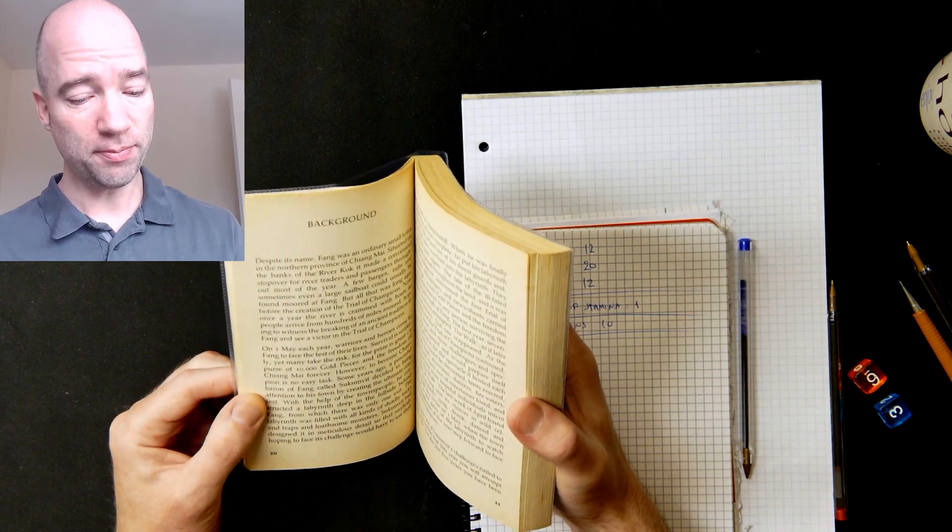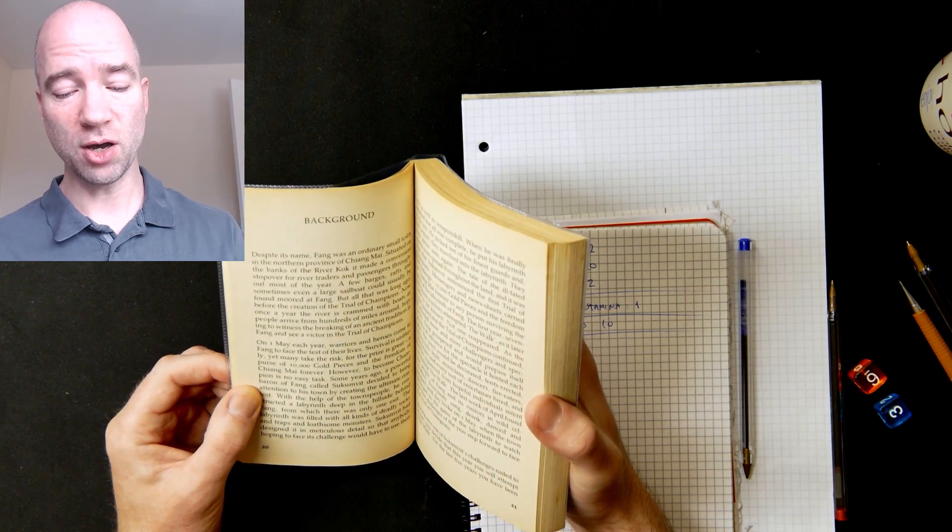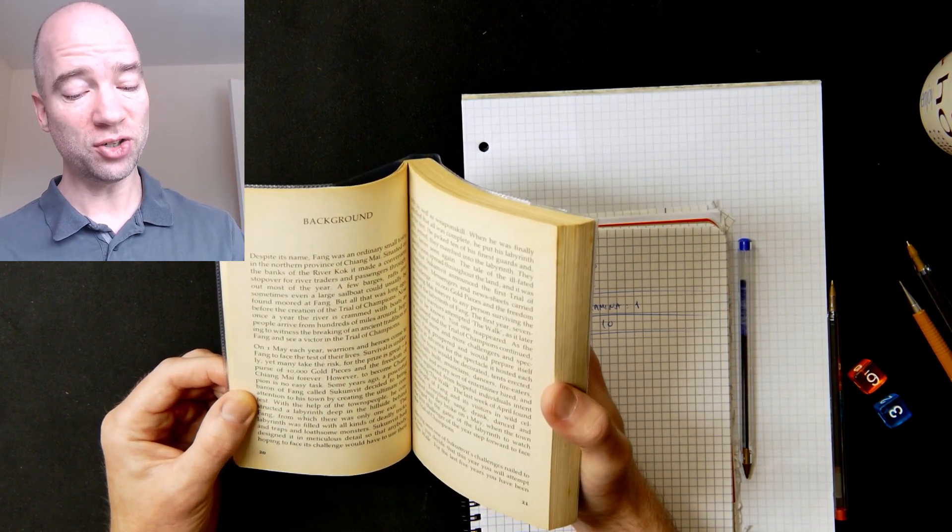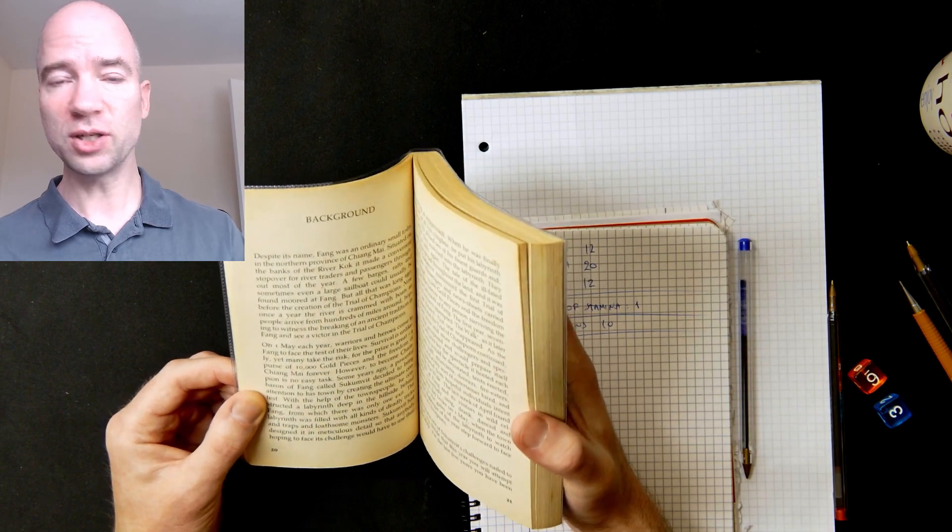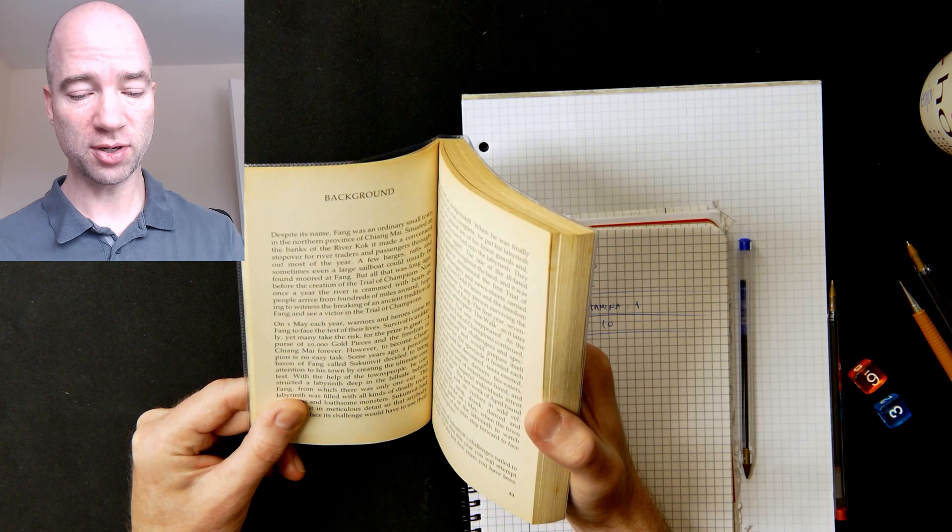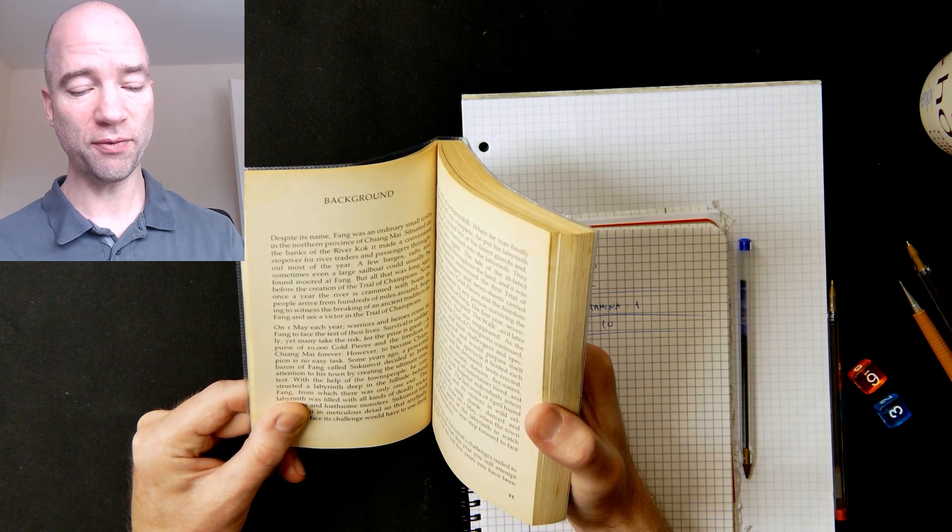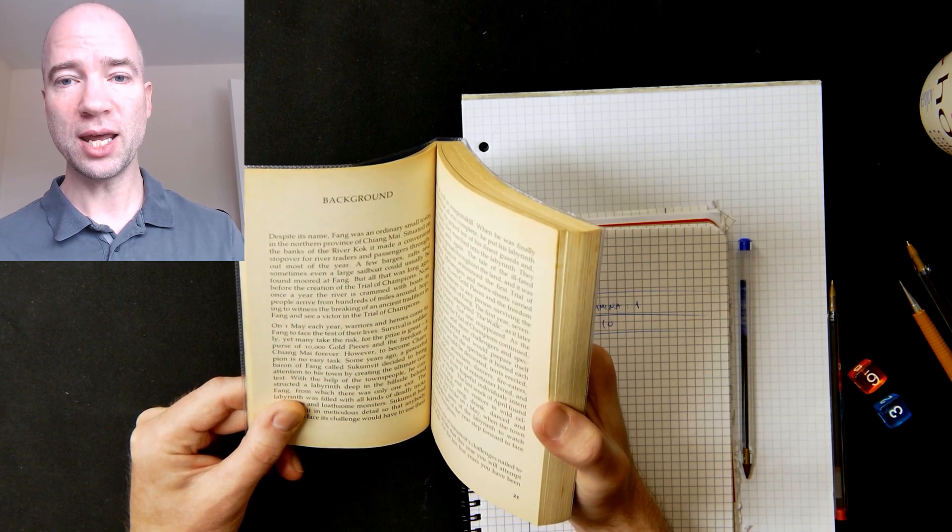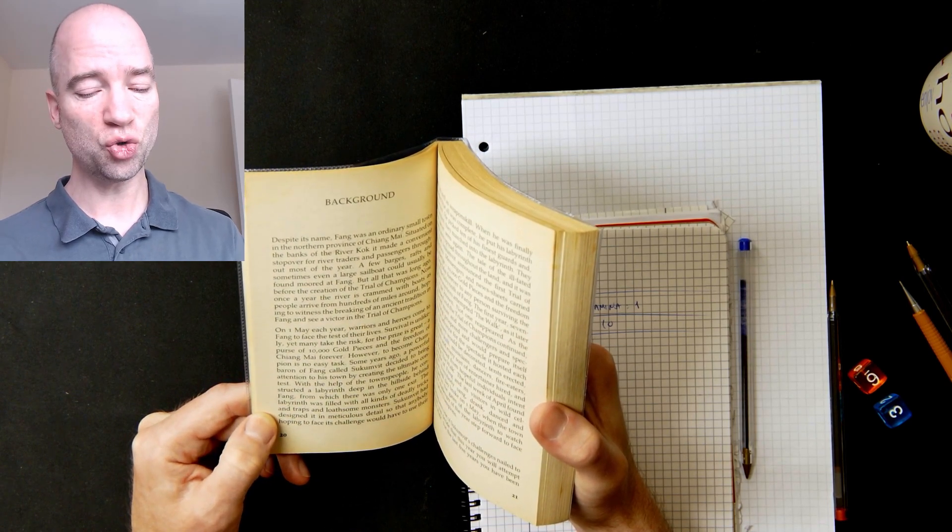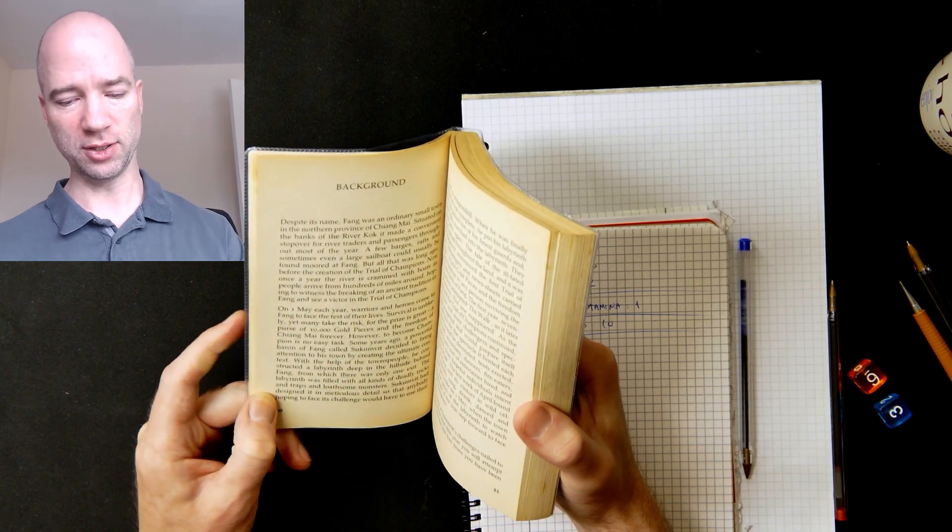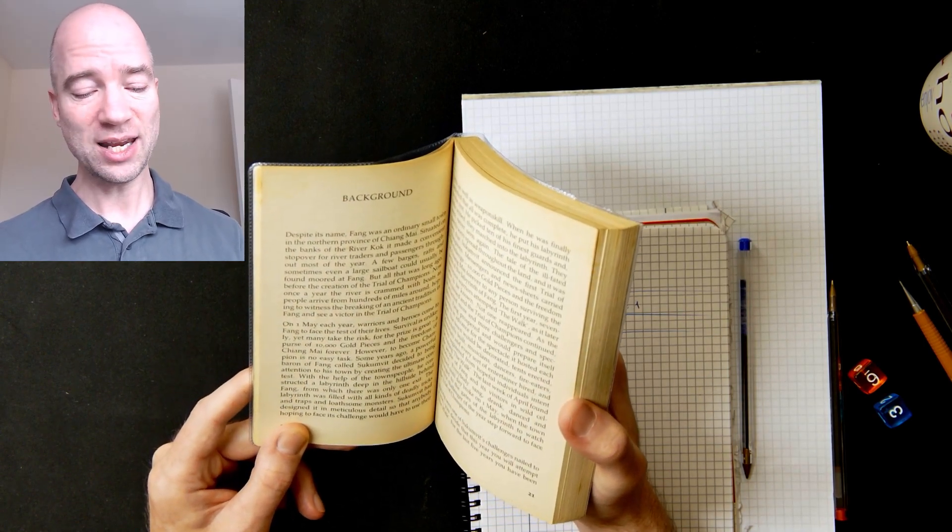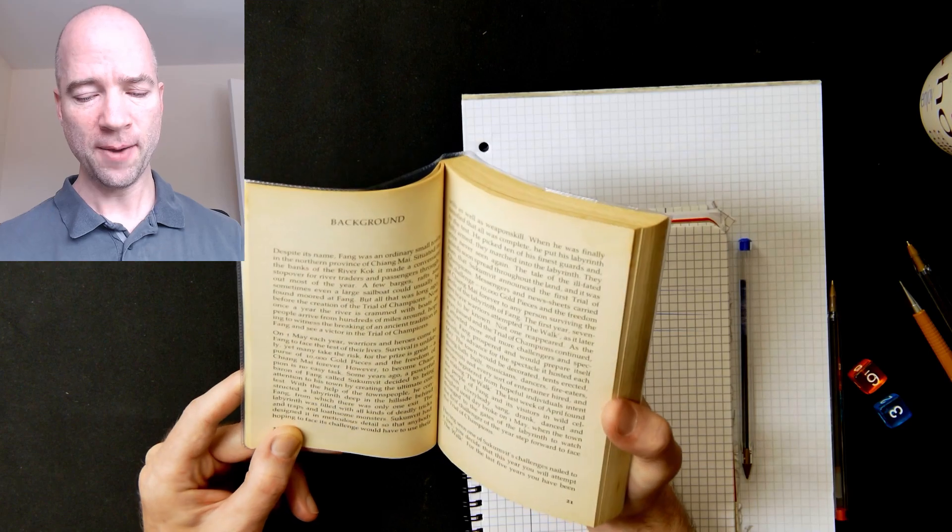On the first of May each year, warriors and heroes come to Fang to face the test of their lives. Survival is unlikely, yet many take the risk, for the prize is great: a purse of ten thousand gold pieces and the freedom of Chiang Mai forever. So if you're after the money I suppose. However to become champion is no easy task. Some years ago a powerful baron of Fang called Sukumvit decided to bring attention to his town by creating the ultimate contest.